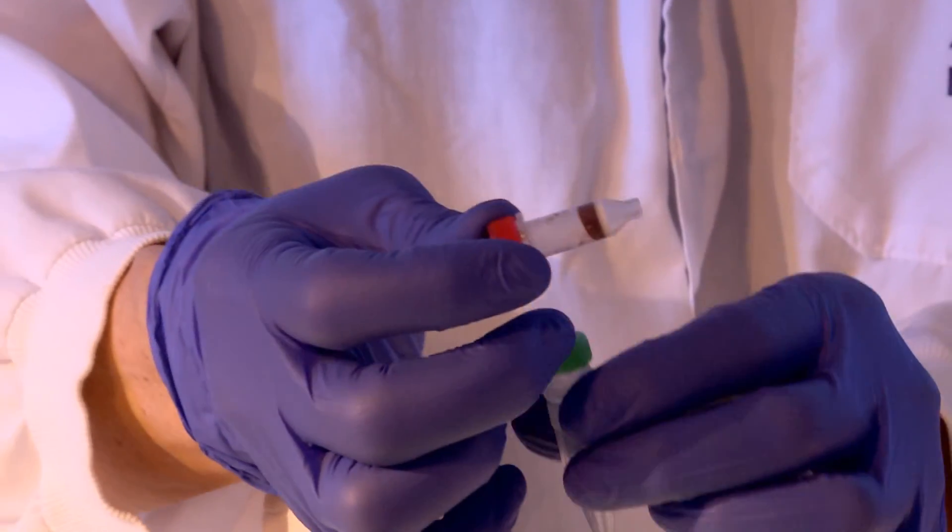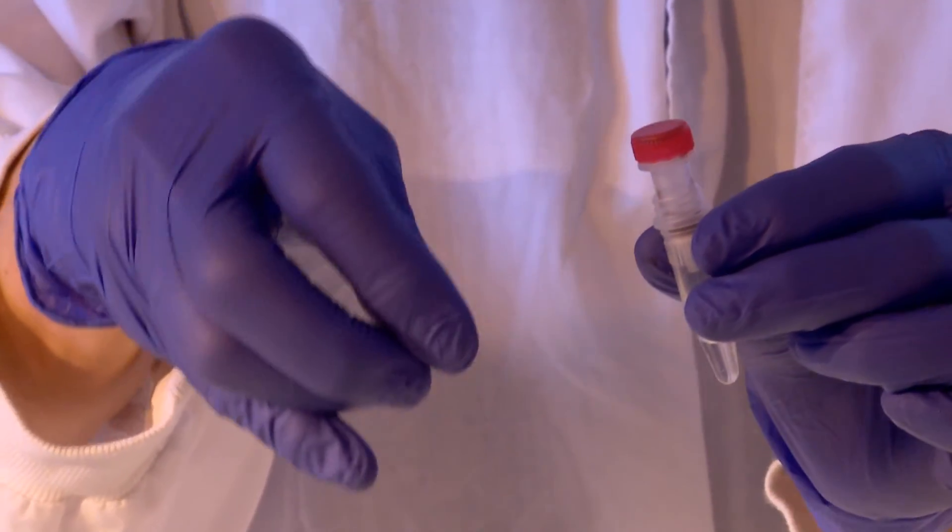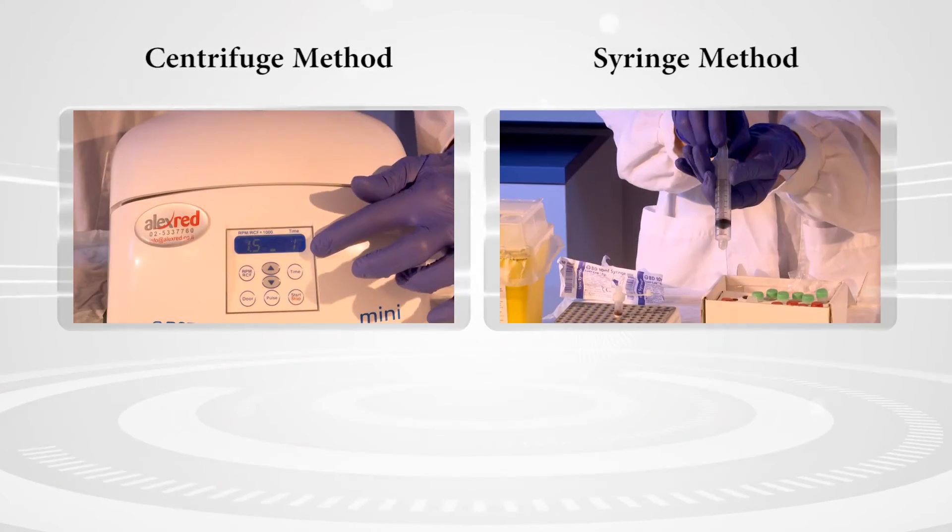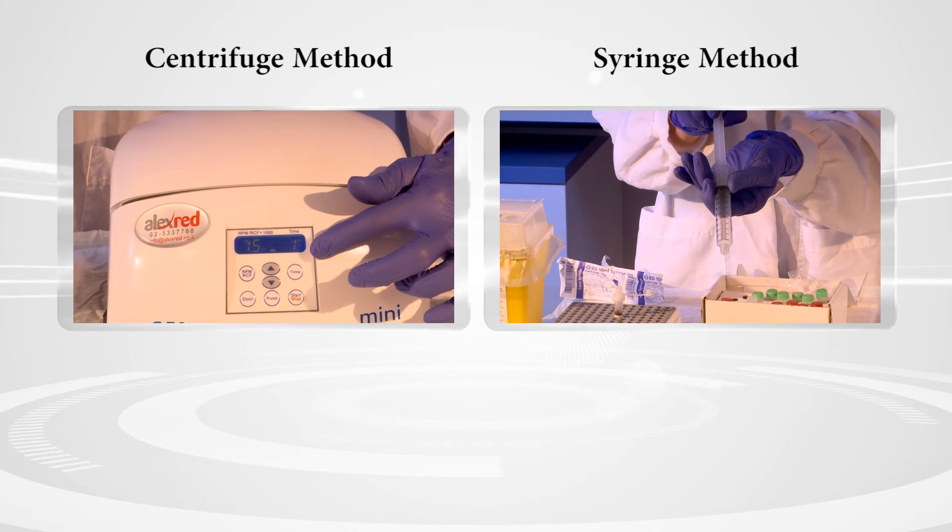Gently place the column into the 1.5-milliliter green-lid collection vial containing PC-run dilution buffer. The DNA can be displaced into the PC-run dilution buffer by either of the two methods described below.